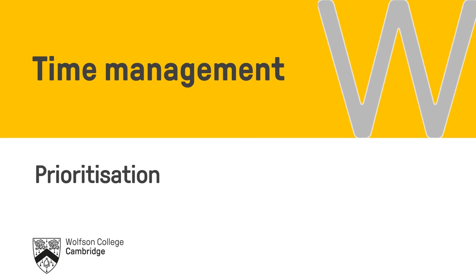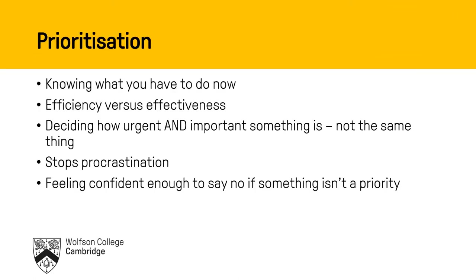One of the key aspects of time management is prioritisation, which is deciding what to do when. This is one way that you can rank your to-do list — we've got other presentations on how to generate that to-do list — but knowing what you've got to do right now and what you can put off until later is another key part of time management.